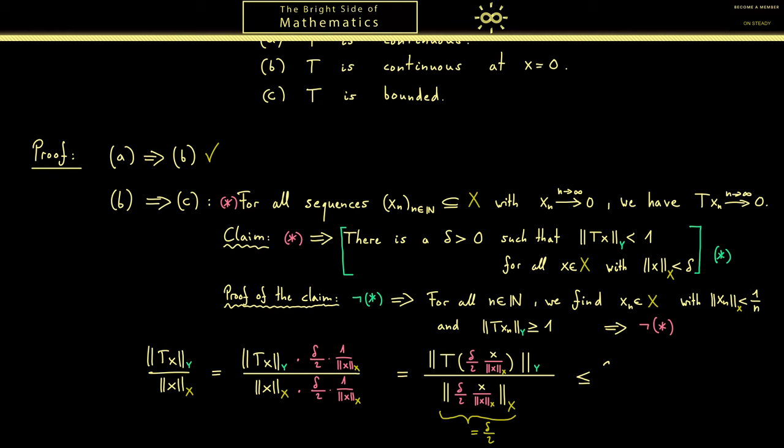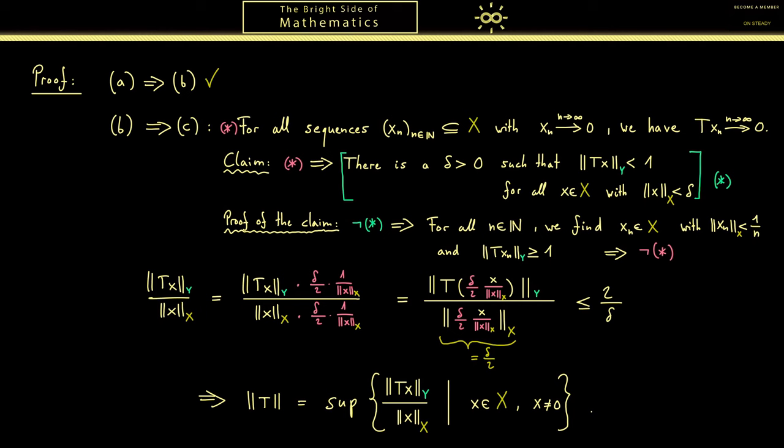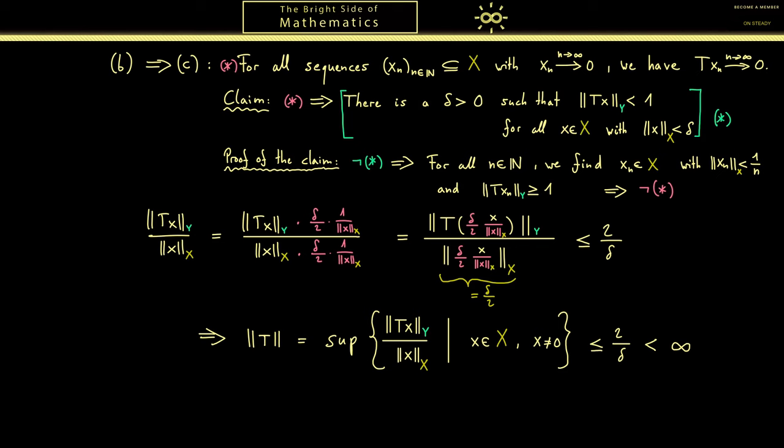So the only thing that remains is applying the supremum on both sides. Now since we exclude the zero vector we know this all works, also the supremum has to be less than 2 over δ. The important thing is of course this is not infinity. Well this was (b) to (c), continuity at zero implies boundedness.